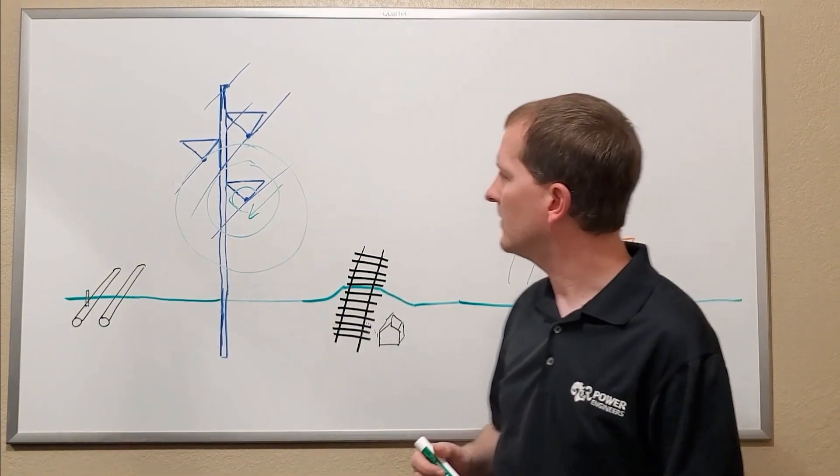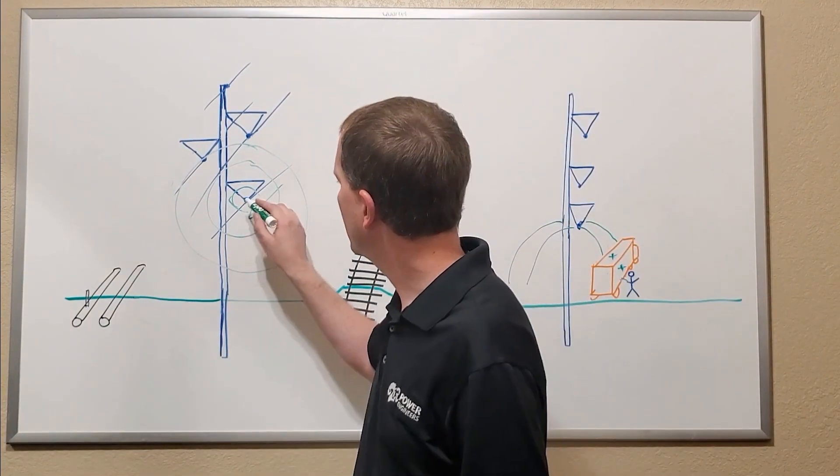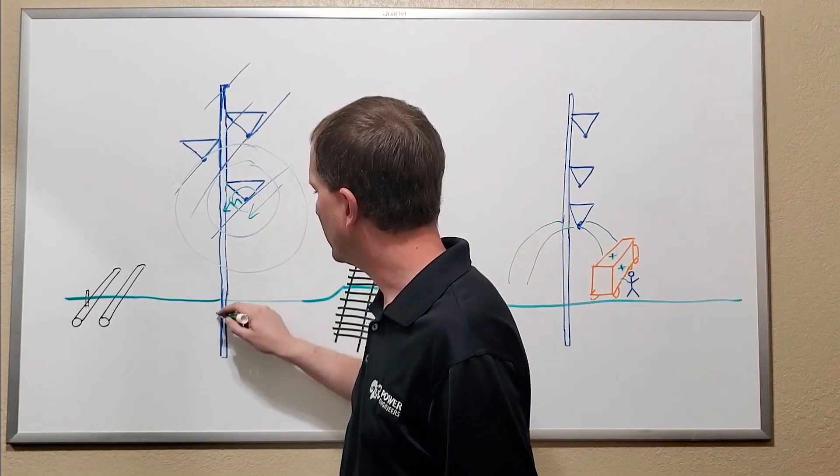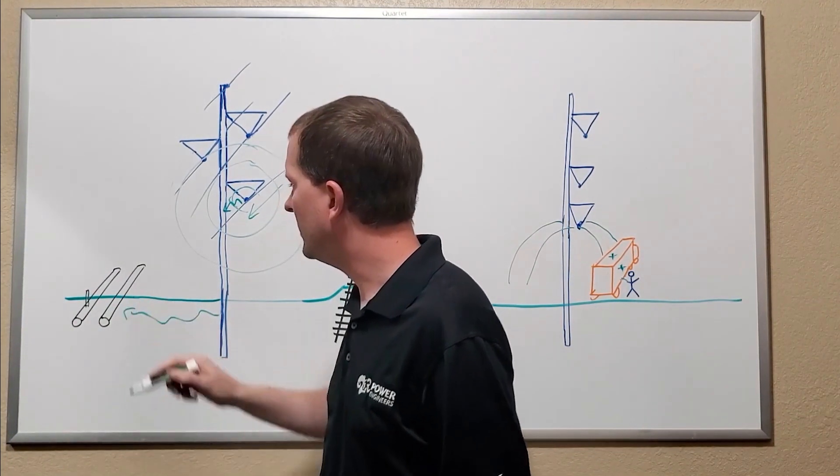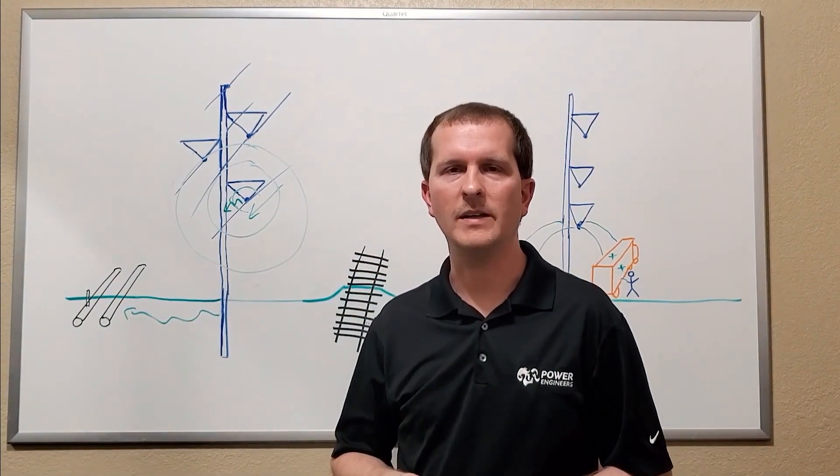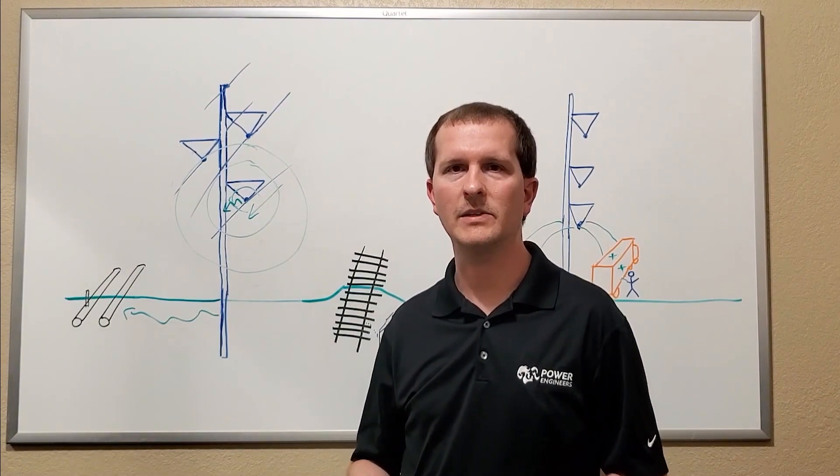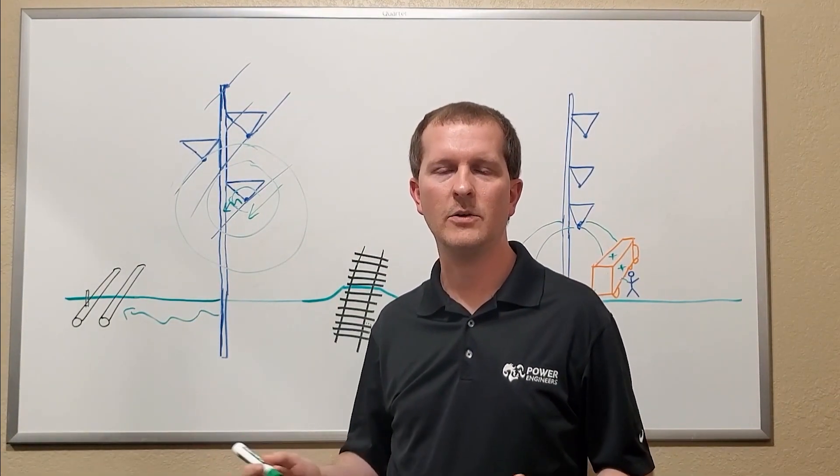Finally, if there's a fault on the transmission line, the voltage may transfer through the soil onto other objects, such as the pipelines, potentially causing significant damage to the coating or to any equipment that's attached.